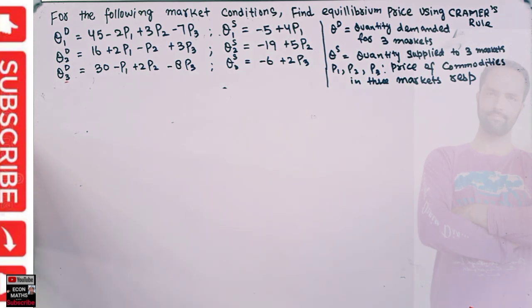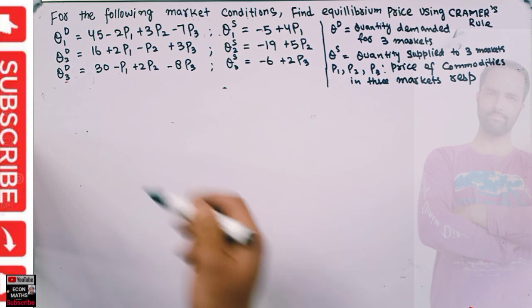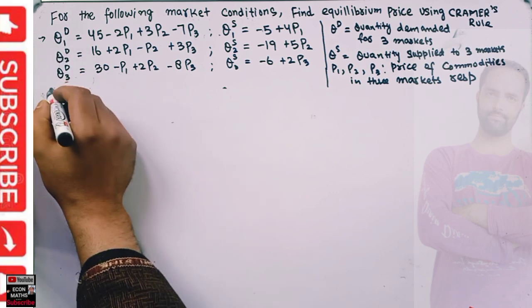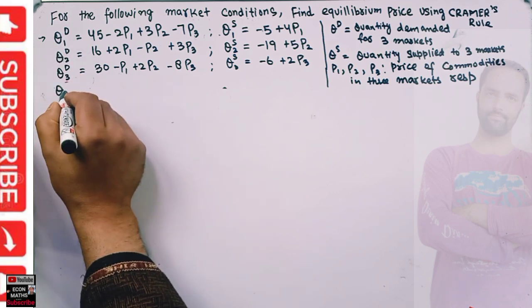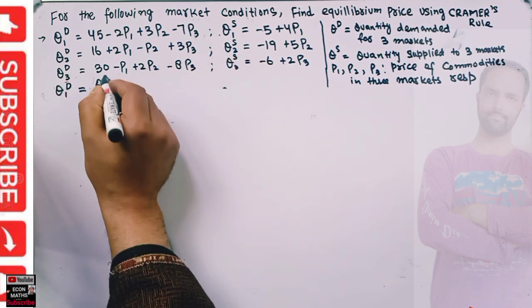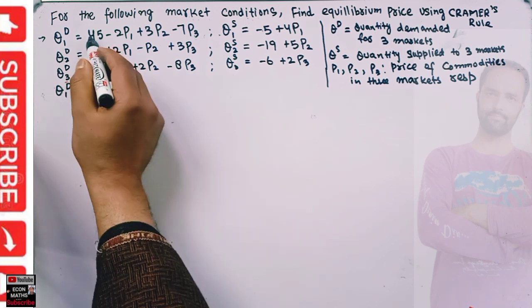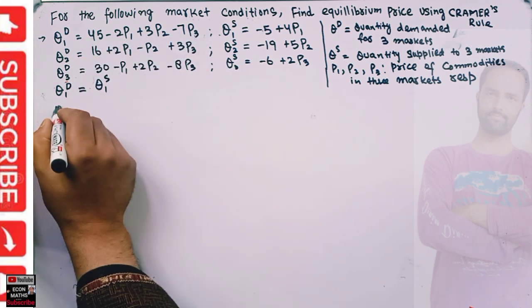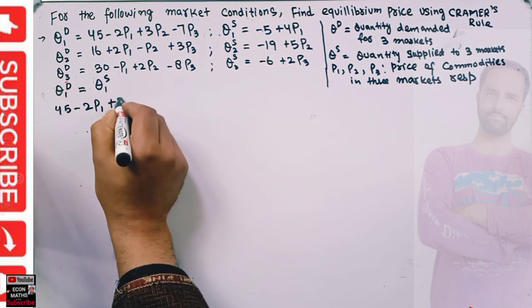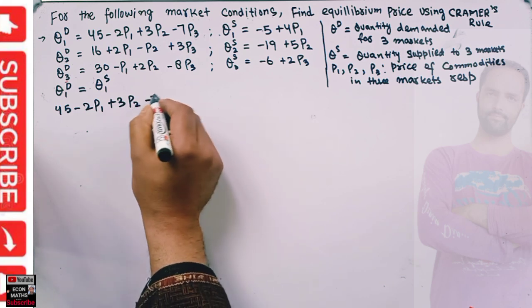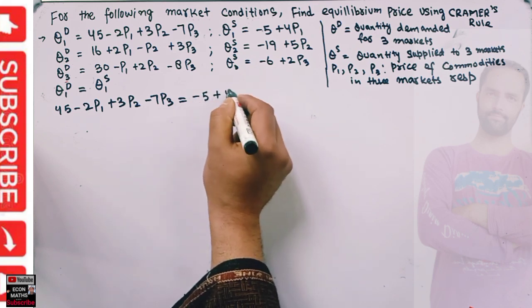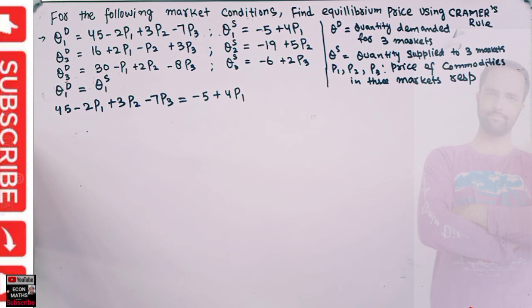To apply Cramer's Rule, we first need to find the individual equilibrium in each market. At equilibrium, quantity demanded in the first market should equal quantity supplied in the first market. So: 45 - 2p1 + 3p2 - 7p3 = -5 + 4p1.